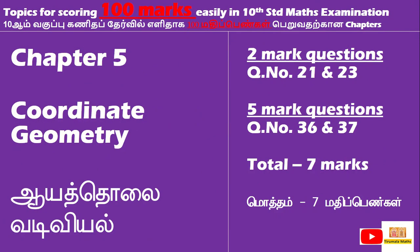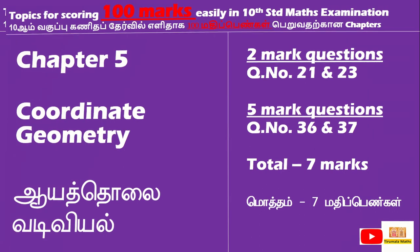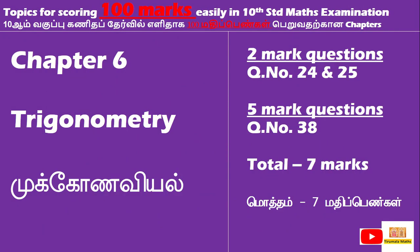The next one is chapter 5: coordinate geometry. In this chapter you will see two 2-mark questions and two 5-mark questions. One of the 5-mark questions will be answered, and the 2-mark questions are compulsory. Either 2-mark or 5-mark questions will be there, but you have to answer each one. Putting together, that is 7 marks allotted. The first exercise will be 2 marks, and the second and third exercises will be 5 marks.